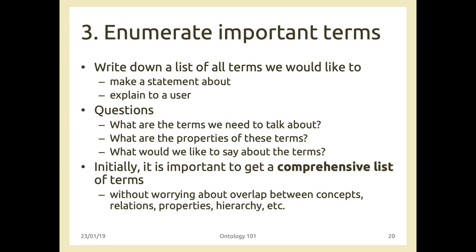For example, 'student' could be a term. Which properties can we define for students? We might consider age, name, height, gender, or average mark — but in our educational domain we may not need all of these. To get started it's important to get a comprehensive list of terms without worrying about overlapping terms, duplicate relationships, and so on. While competency questions are not a comprehensive list, terms should be.